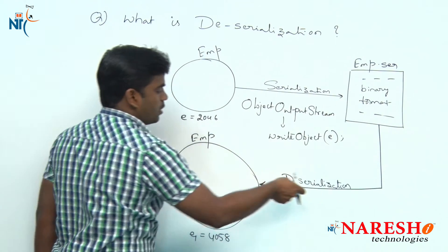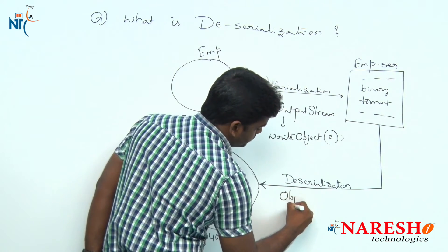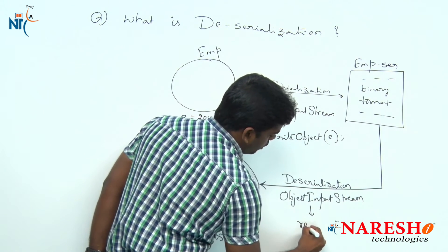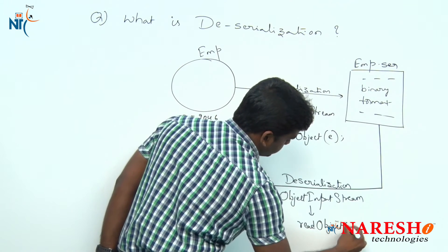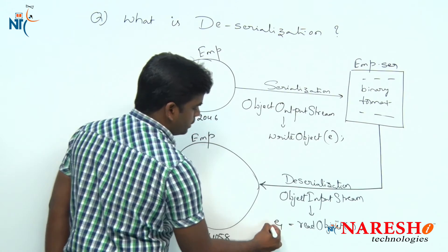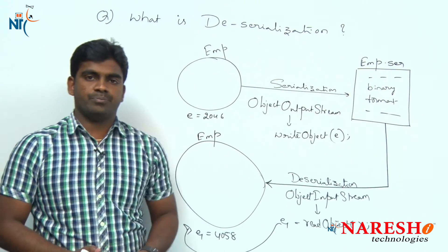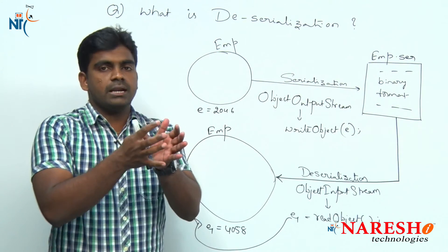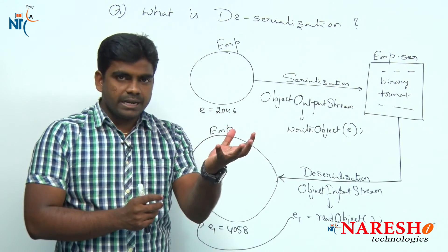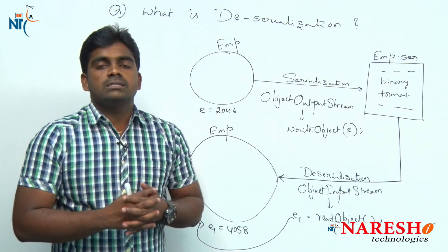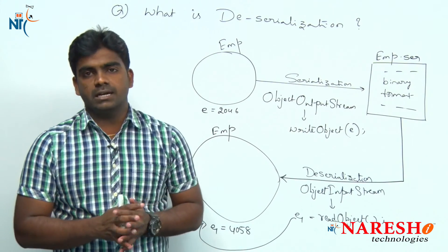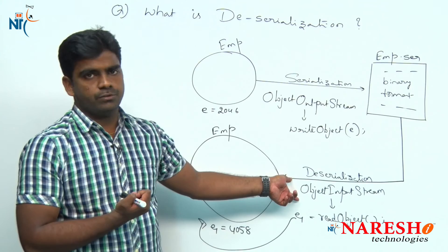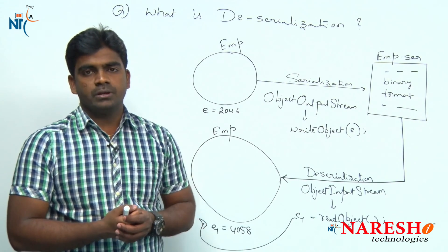Now we are reading the information, reading the object state. We use ObjectInputStream, and there is a readObject method. We will store the value into E1, a reference variable. The concept of deserialization is very simple — just converting the serializable file into object, meaning re-acquiring that object information from the serializable file. The class we use is ObjectInputStream; we read the information by calling the readObject method.